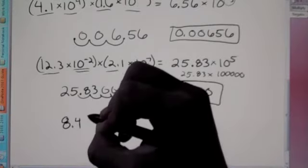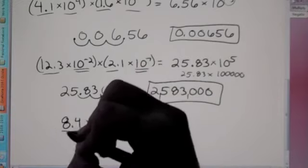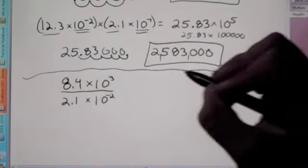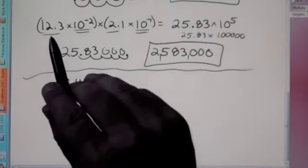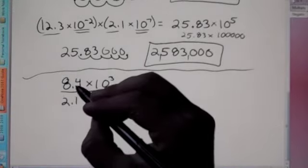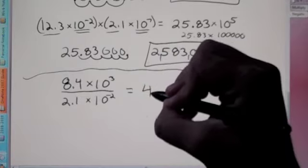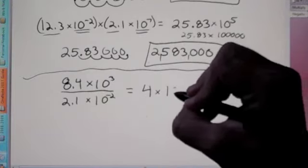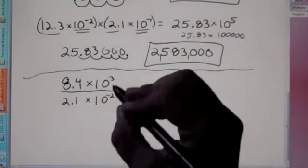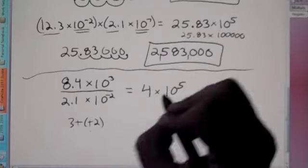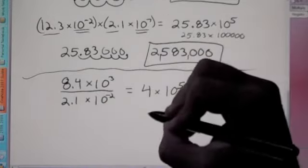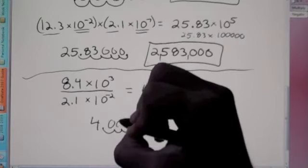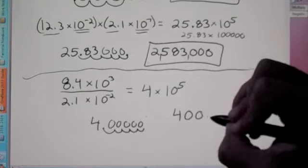One last problem: 8.4 times 10 to the 3rd, divided by 2.1 times 10 to the negative 2. We're doing division here. First, 8.4 divided by 2.1 is 4. For the tens, since the negative 2 is in the denominator, move it to the top — or subtract: 3 minus negative 2 becomes 3 plus 2, which is 5. So we have 10 to the 5th. Move the decimal to the right 1, 2, 3, 4, 5 places, filling in zeros. The final answer is 400,000.